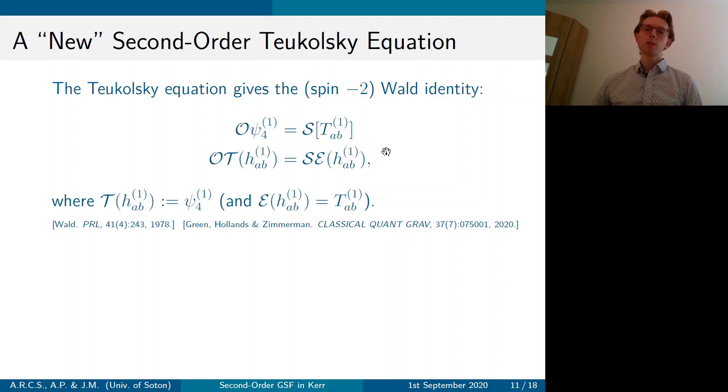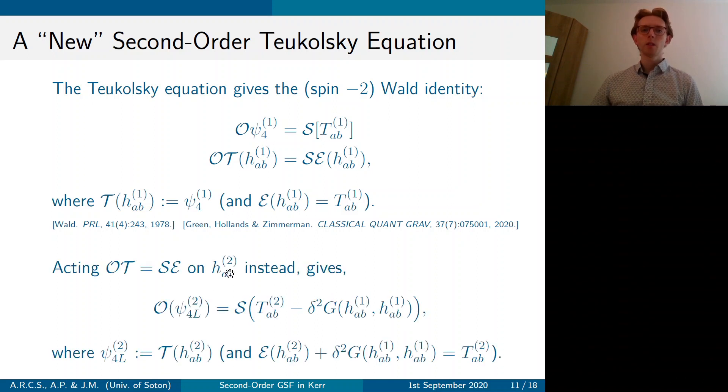To derive this equation, we're going to use the Wald identity. So here's just a quick note that the Wald identity simply falls out from the Teukolsky equation. So when you define an operator T such that it gives you psi 4 1 for H1, then you can rewrite it into this familiar OT equals SE form using the linearized Einstein equation.